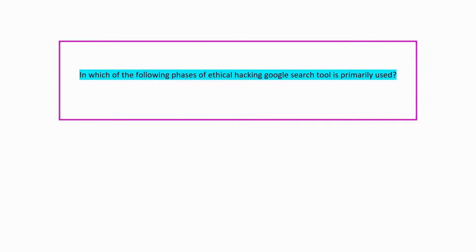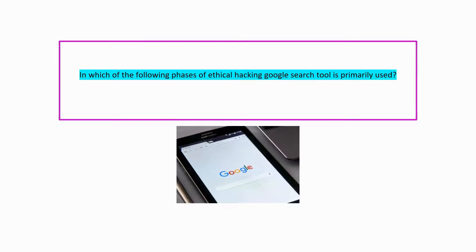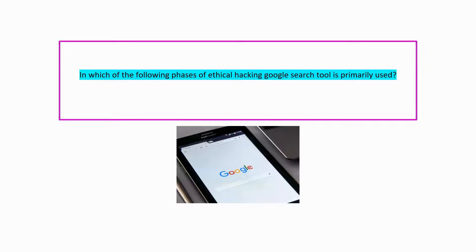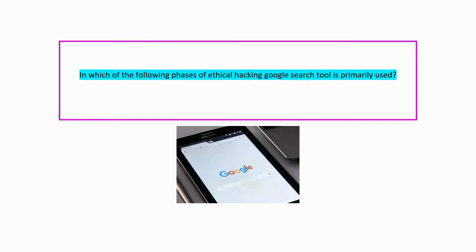Next question: in which of the following phases of ethical hacking is the Google search tool primarily used? Reconnaissance or footprinting is the step wherein information is being gathered, and Google is widely used for information gathering.